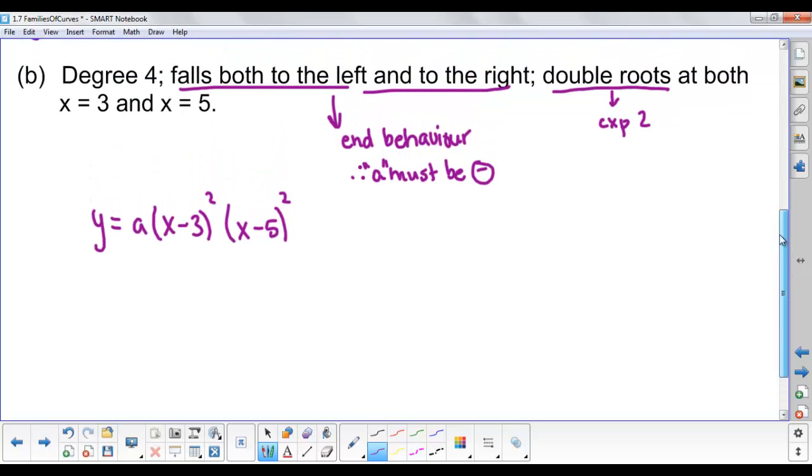We're trying to create a possible equation, so again sub in any value a that you like, as long as it's a negative number. Let's say y equals -3.7(x-3)²(x-5)². And that's it.